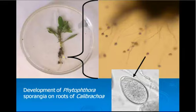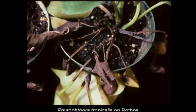The zoospores are the infective propagules — they travel down the water stream, bump into the next plant, adhere to the roots, and infect them. This happens to be Phytophthora direshleri. Here's a pothos plant infected with Phytophthora tropicalis — the name probably suggests where this pathogen came from: South America, the tropics, wherever pothos originates.